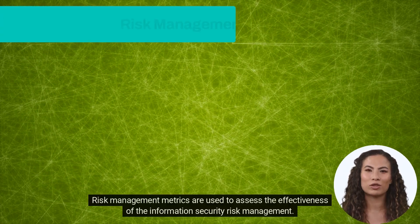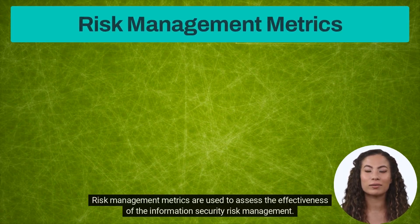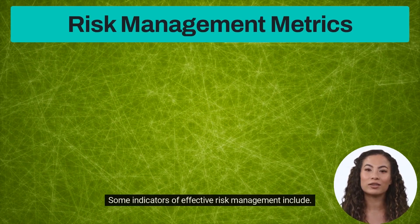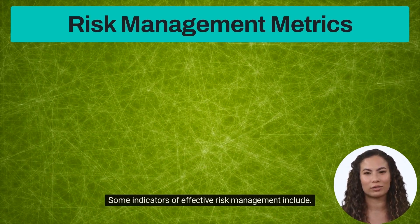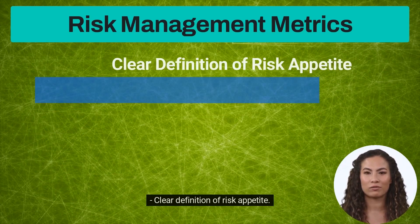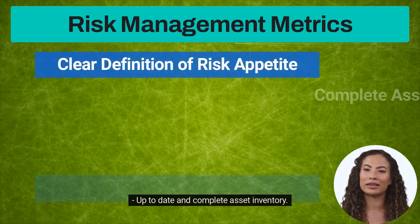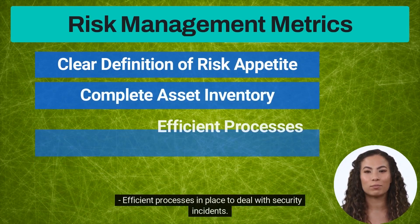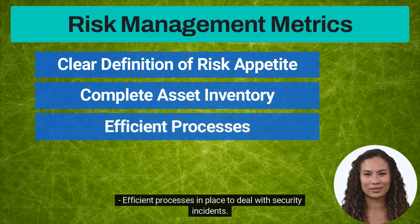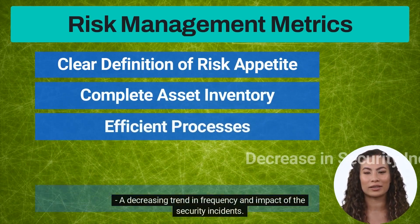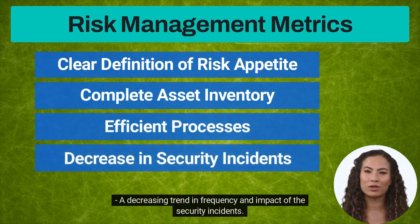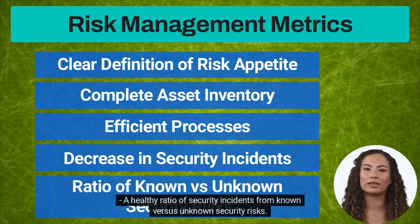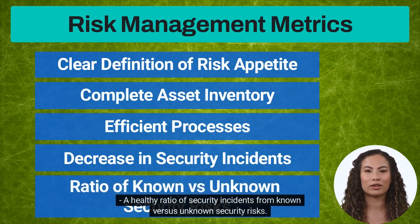Risk management metrics are used to assess the effectiveness of information security risk management. Some indicators of effective risk management include: clear definition of risk appetite; up-to-date and complete asset inventory; efficient processes in place to deal with security incidents; a decreasing trend in frequency and impact of security incidents; and a healthy ratio of security incidents from known versus unknown security risks.